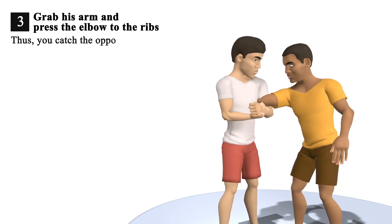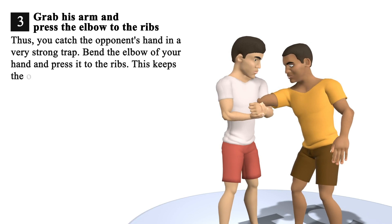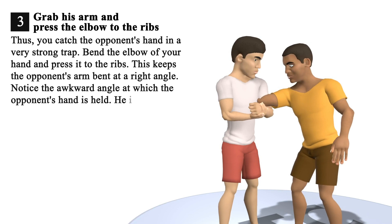Thus, you catch the opponent's hand in a very strong trap. Bend the elbow of your hand and press it to the ribs. This keeps the opponent's arm bent at a right angle. Notice the awkward angle at which the opponent's hand is held. He is caught in a chicken wing.